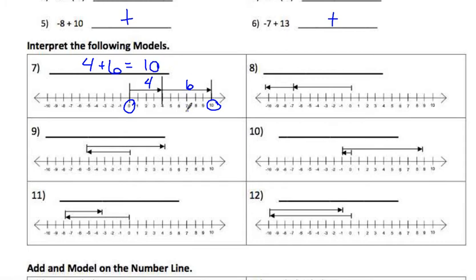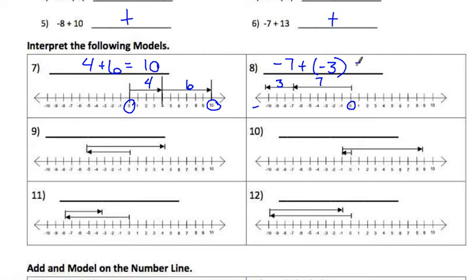In number 8, I start at zero, then count 1 through 7 for the first arrow, and then 1, 2, 3 back to the left — because left is the negative side. So it's negative 7 plus negative 3 equals negative 10. Or you could write it as negative 7 minus 3 equals negative 10. Both are correct because the minus sign tells you the 3 is negative, same as having negative 3 with a plus sign.